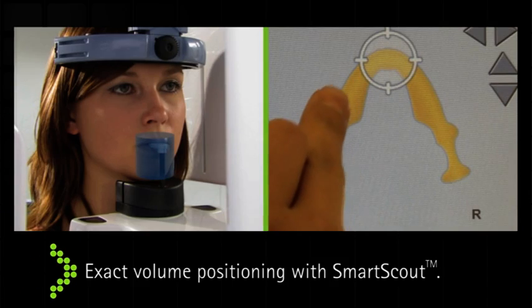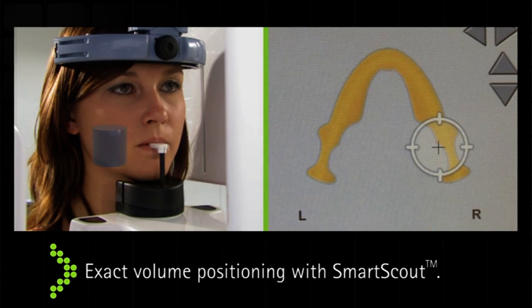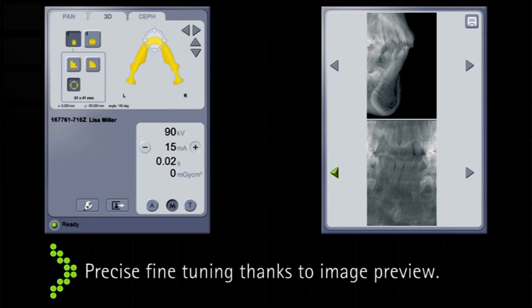With the innovative smart scout function, the x-ray volume is easy and precisely positioned. The system automatically adjusts to the set position. A two-dimensional scout image allows you to have a precise orientation on the region to be assessed. This means you can save valuable time to completely dedicate yourself to your patients.